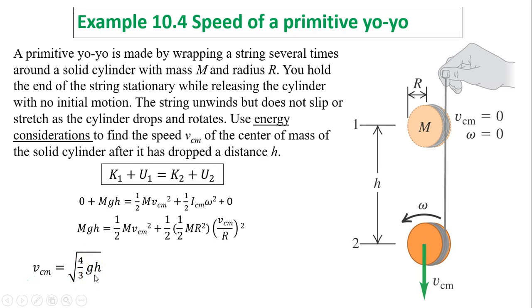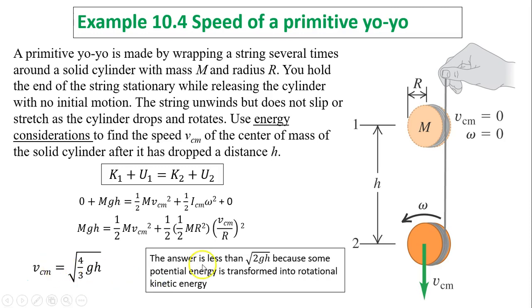As you can see, if you just drop the cylinder freely, its speed would be square root of 2gh. But v center of mass here is less than that. This is because some of the potential energy is converted into rotational kinetic energy — part becomes translational kinetic energy and part becomes rotational kinetic energy. So the yoyo goes down slower than free fall.